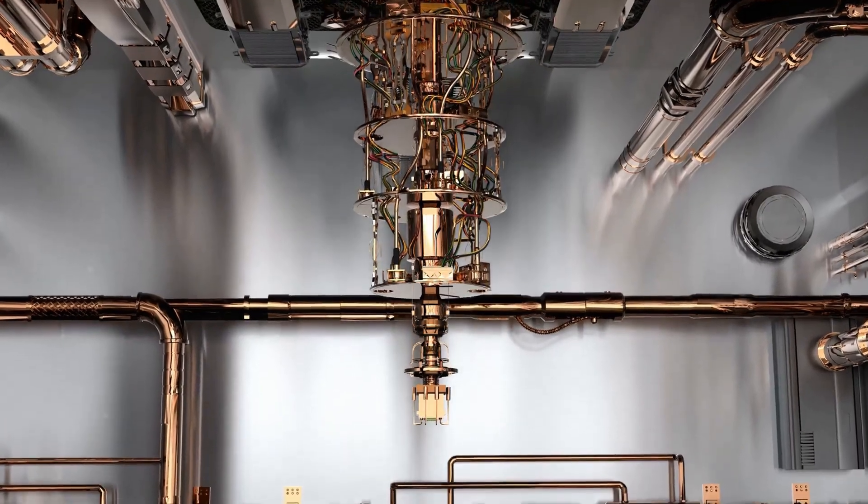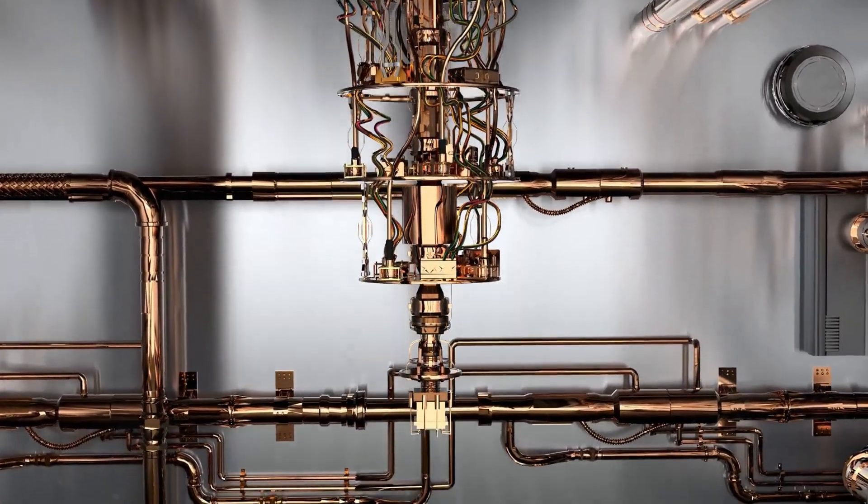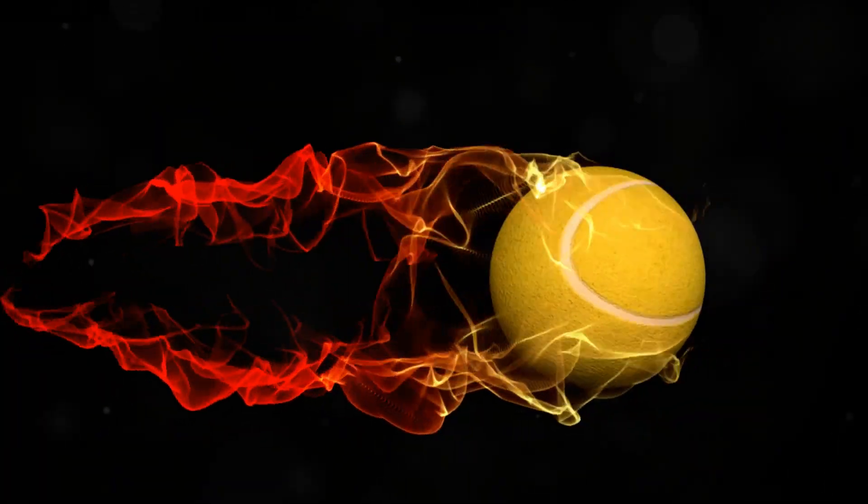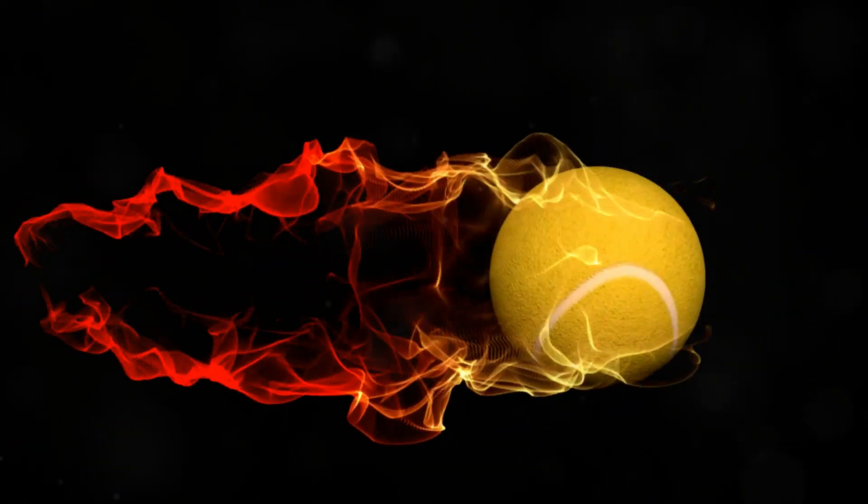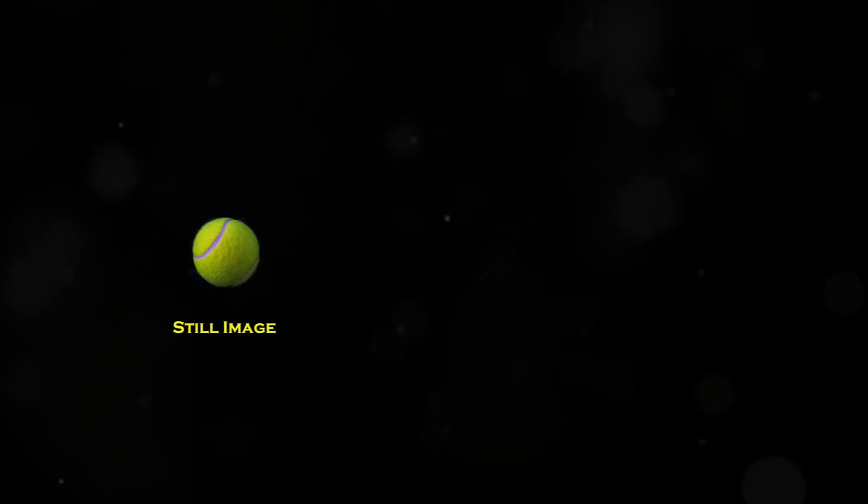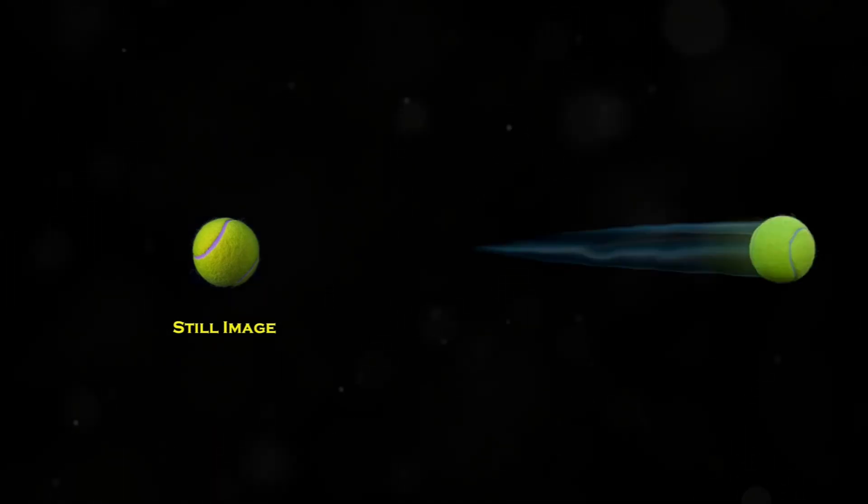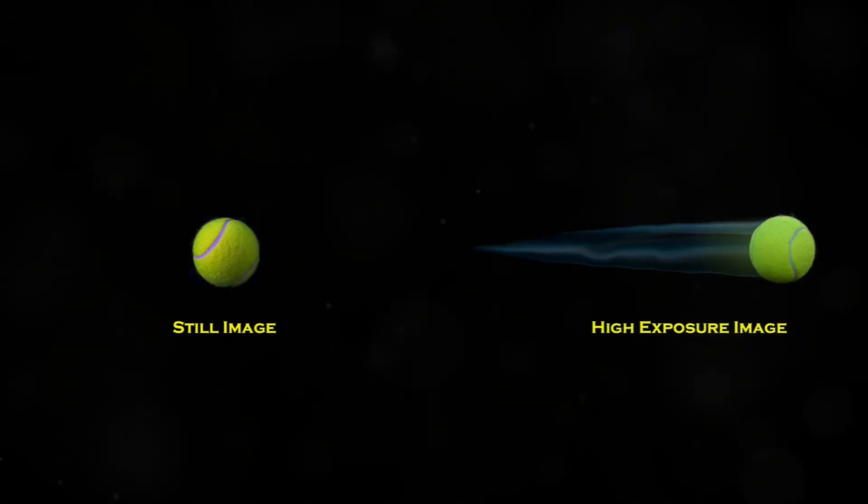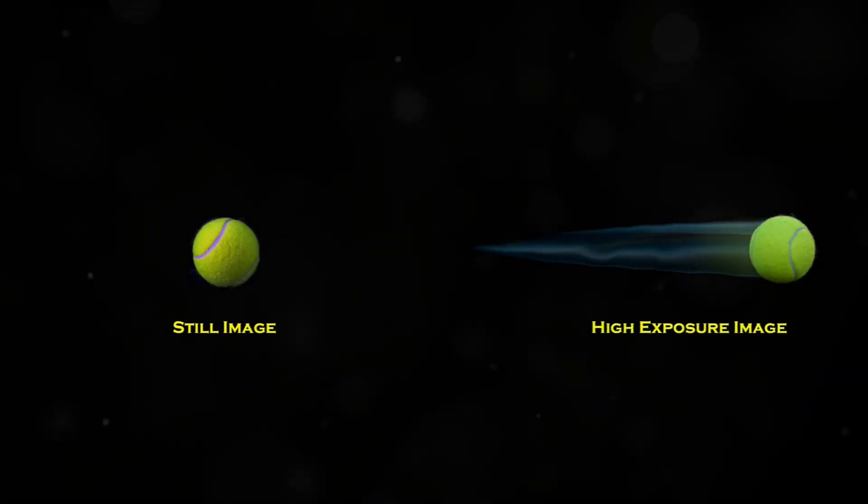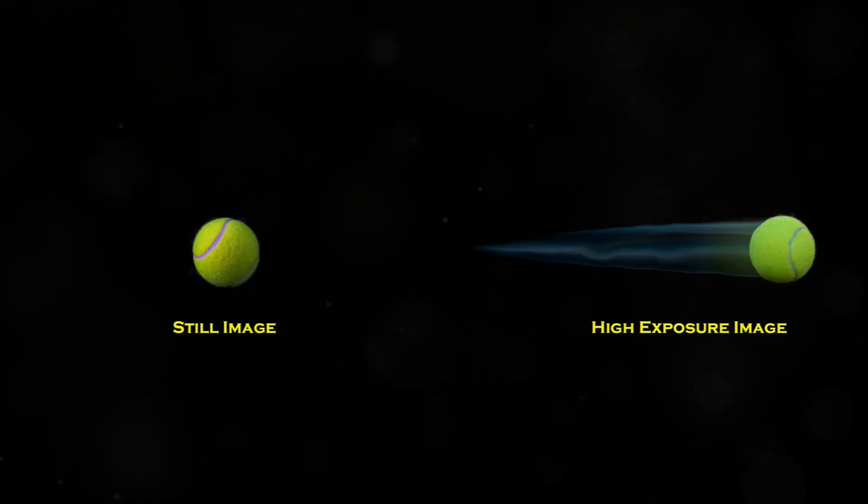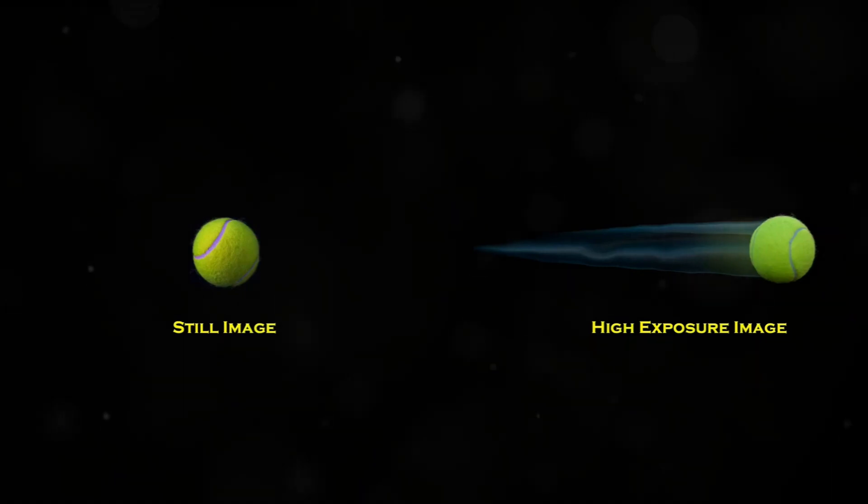To help make sense of this, imagine you're in a game and a tennis ball is moving at high speed. If you take a regular photo of it, the ball will appear still in the image. In this case, you'd know its exact position, but you wouldn't be able to tell in which direction it's moving. Now if you take a high exposure shot of the fast moving ball, the image would show the motion blur of the ball, giving you a good idea of the direction it's moving in, but you won't be able to pinpoint its exact position.